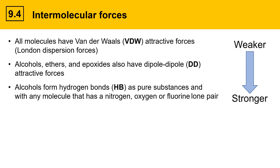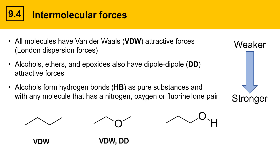We'll see this when we compare the physical properties of three different molecules: an alkane, an ether, and an alcohol. The alkane has only van der Waals attractive forces, which is the weakest type. The ether adds dipole-dipole attractive forces. The dipoles can be seen here with the partial positives and negative charge indicated. These dipoles allow it to line up and form a dipole-dipole interaction with another molecule of ether.